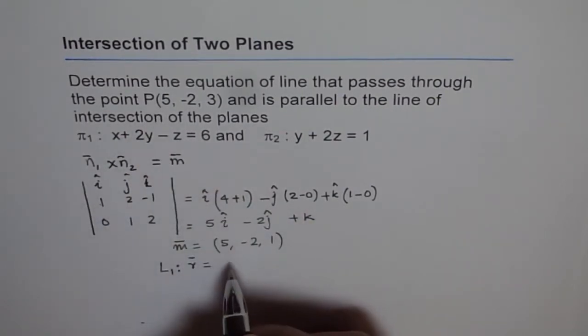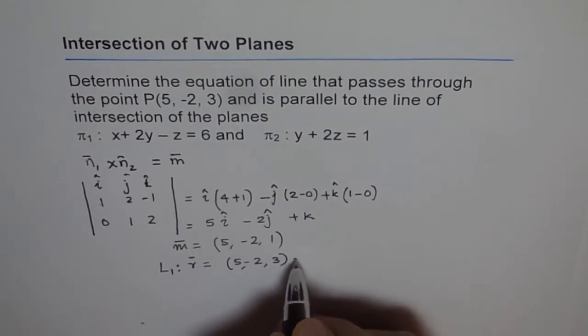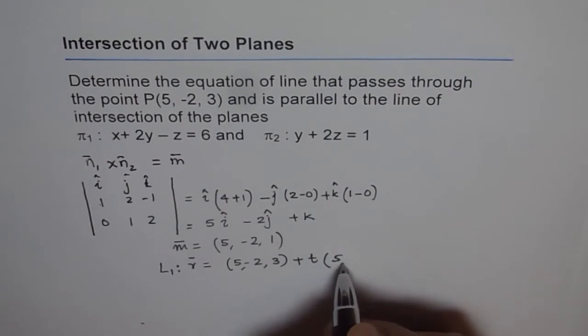Plus t times, that's the parameter, 5, -2, 1. So that's the answer.